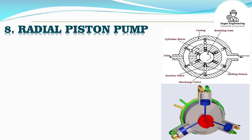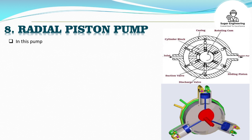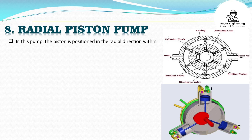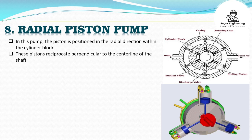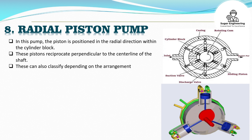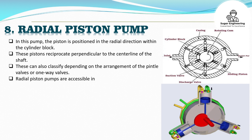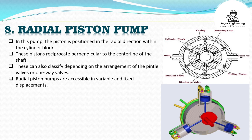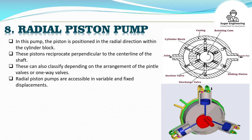In a radial piston pump, the piston is positioned in the radial direction within the cylinder block. These pistons reciprocate perpendicular to the center line of the shaft. These can also be classified depending on the arrangement of the pintle valves or one-way valves. Radial piston pumps are accessible in variable and fixed displacements.